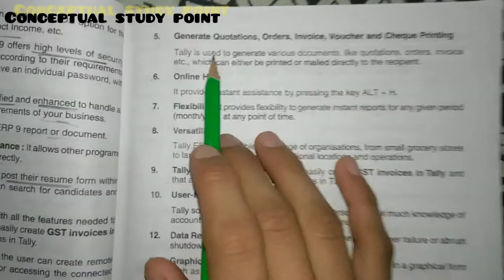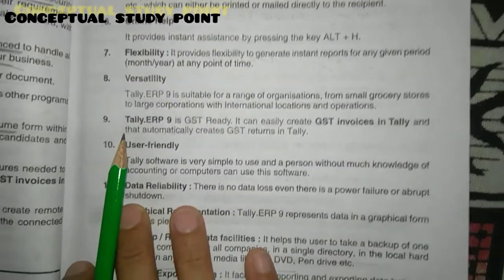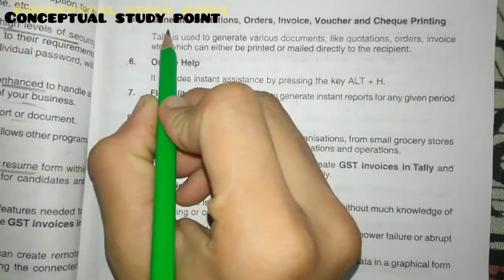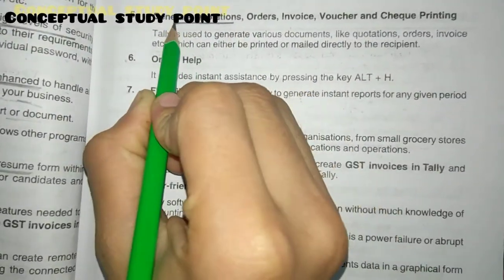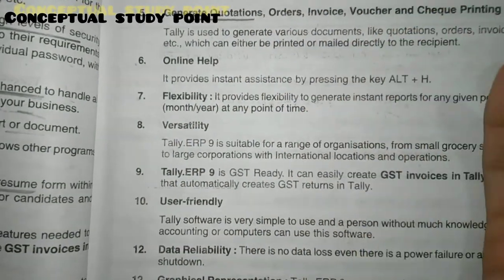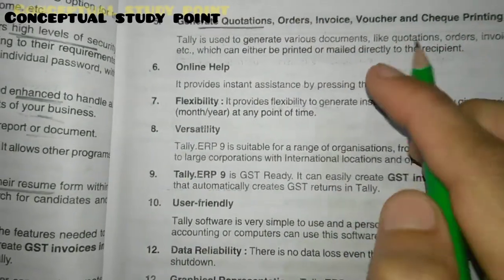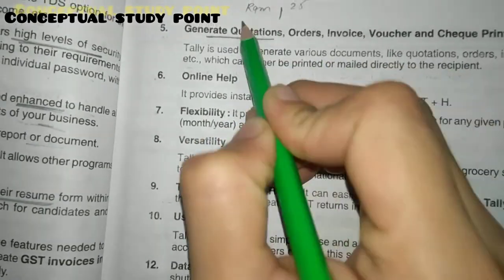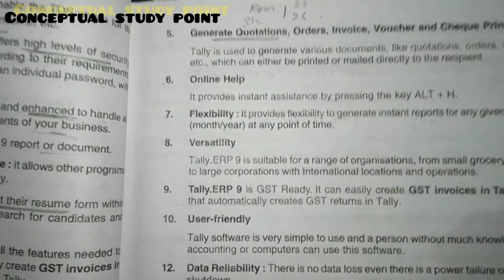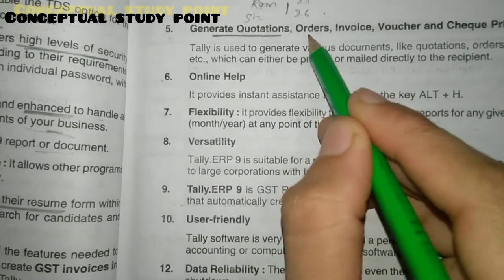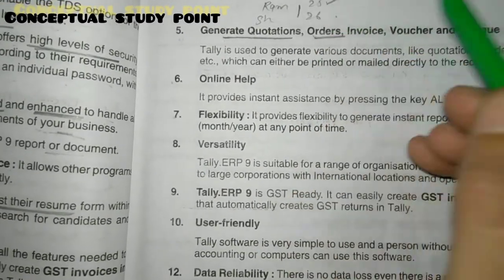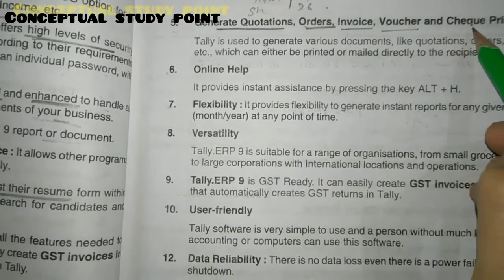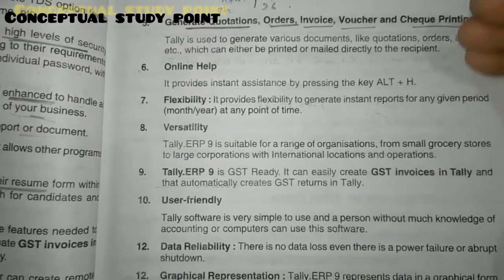The fifth point is the ability to generate quotations, orders, invoices, vouchers, and check printing. For example, you can prepare a price quotation to propose your rates to a client. Once confirmed, an order is placed, followed by an invoice, and then check printing.